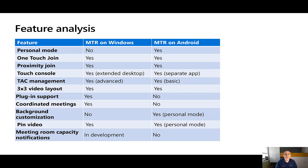Some other features: 3x3 layout is now available across both. Plug-in support — typically leveraged by Extron or Crestron for room control — exists today on Windows but doesn't exist on Android. Background customization, the ability to blur or change your background, is available in personal mode on MTR on Android but not on Windows. You can pin video across both, though personal mode for Android only. Meeting room capacity notifications are specific to Windows at this time.